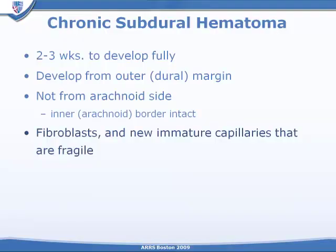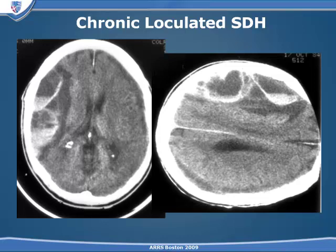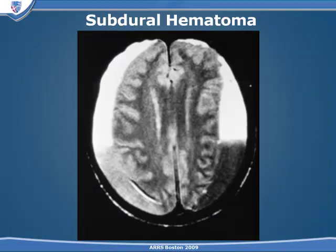The formation of membranes occurs weeks after the creation of a subdural hematoma. These membranes typically develop from the outer dural margin, not from the inner arachnoid margin, and will encapsulate the subdural hematoma, creating loculations in the subdural space. The membranes are highly vascular and prone to spontaneous bleeding, so a patient may end up having enhancing membranes with individual pockets of dependent layering of fresh hemorrhage superimposed on liquefied blood from previous chronic subdural hematomas.